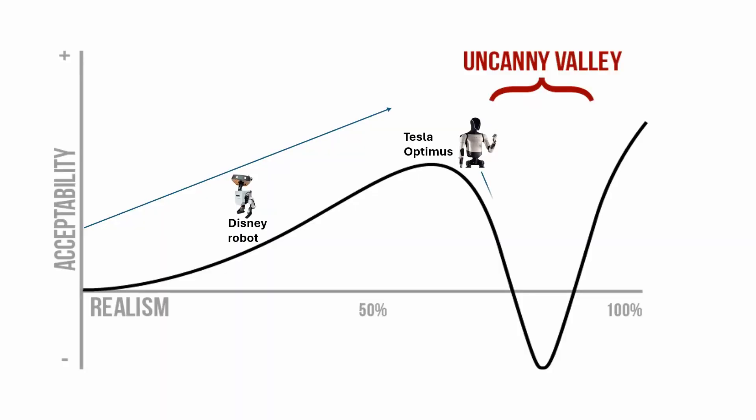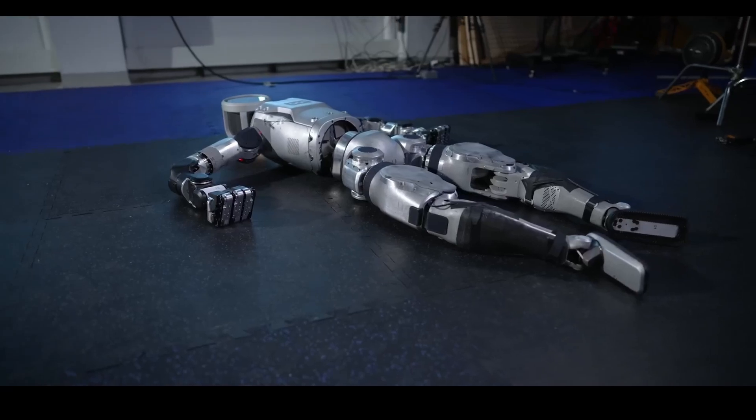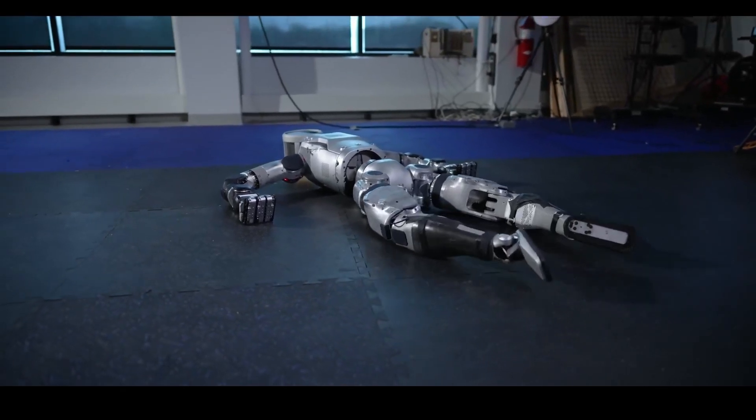The new Atlas, with its broad range of motion allowing arms and head to rotate 360 degrees, edges closer to this uncanny valley, presenting movements that exceed human capabilities. This evokes a sense of eeriness, as the robot is designed to resemble a human yet displays capabilities beyond human norms.